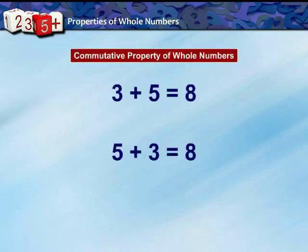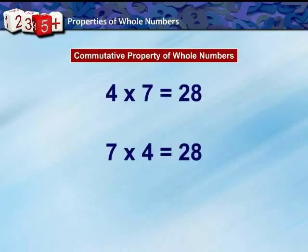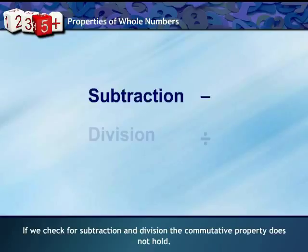In addition, when the order of a pair of whole numbers is changed, the sum remains the same. This is true for all whole numbers, so we say addition is commutative for whole numbers. Similarly, the product also remains the same when the order of multiplication is changed for whole numbers, so multiplication is also commutative for whole numbers. Commutative property does not hold for subtraction and division.